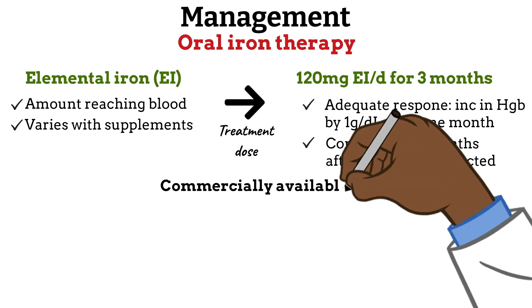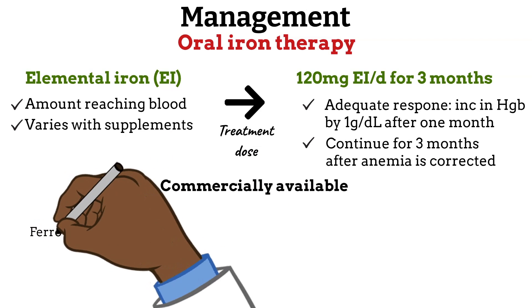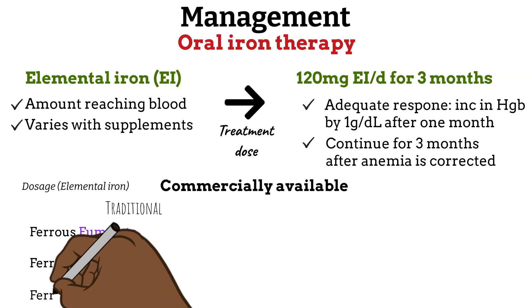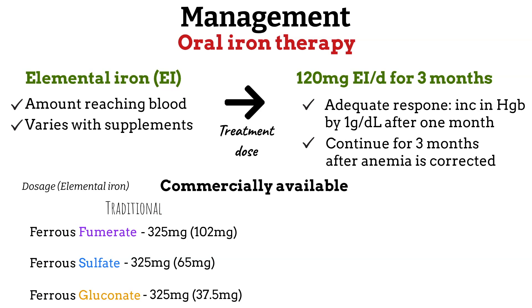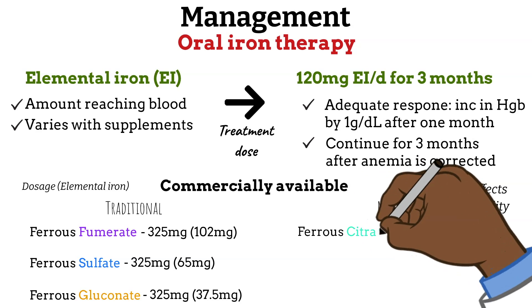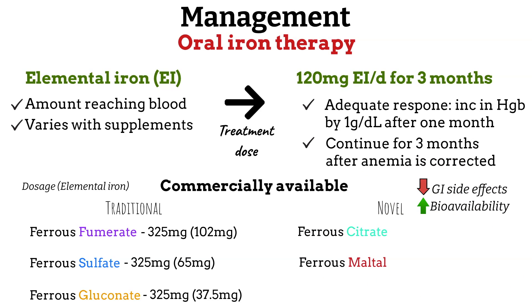Oral iron supplements on the market can be divided into two groups. The traditional agents — ferrous fumarate, ferrous sulfate, and ferrous gluconate — each have a dosage of 325 milligrams with a specific elemental iron content. The higher the elemental iron, the fewer tablets needed per day to achieve that 120 milligrams. Then we have the novel agents, formulated to reduce GI side effects and improve the amount of iron that reaches the bloodstream. Traditional iron supplements can cause GI discomfort, constipation, and nausea. The novel agents include ferrous citrate, ferrous maltol, and liposomal iron, each with different dosages and elemental iron content.